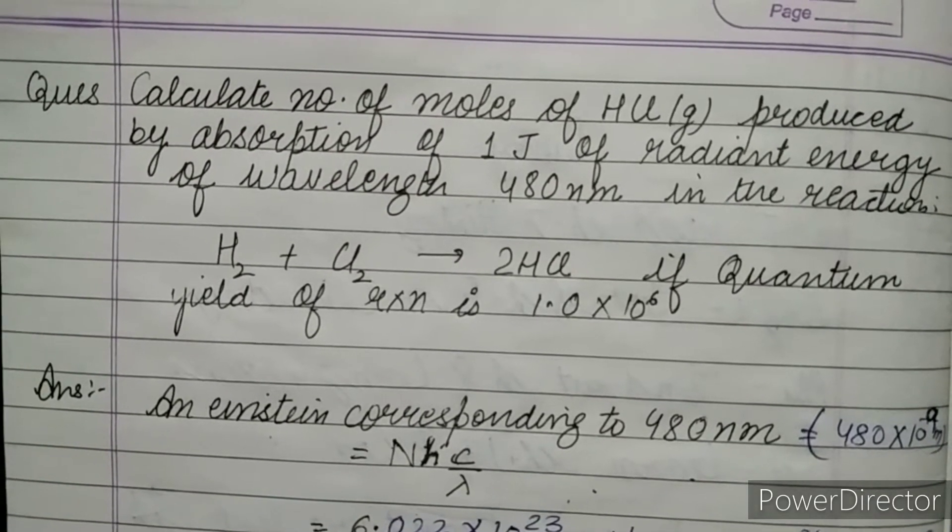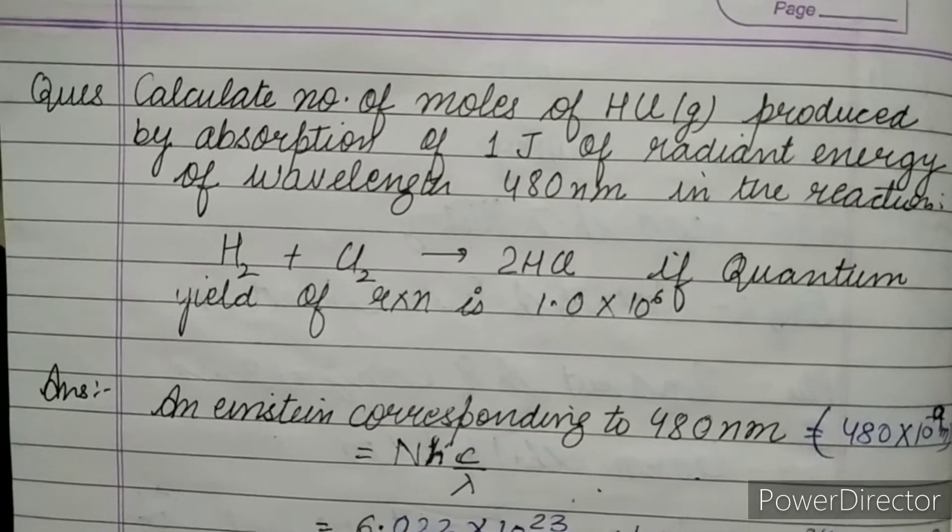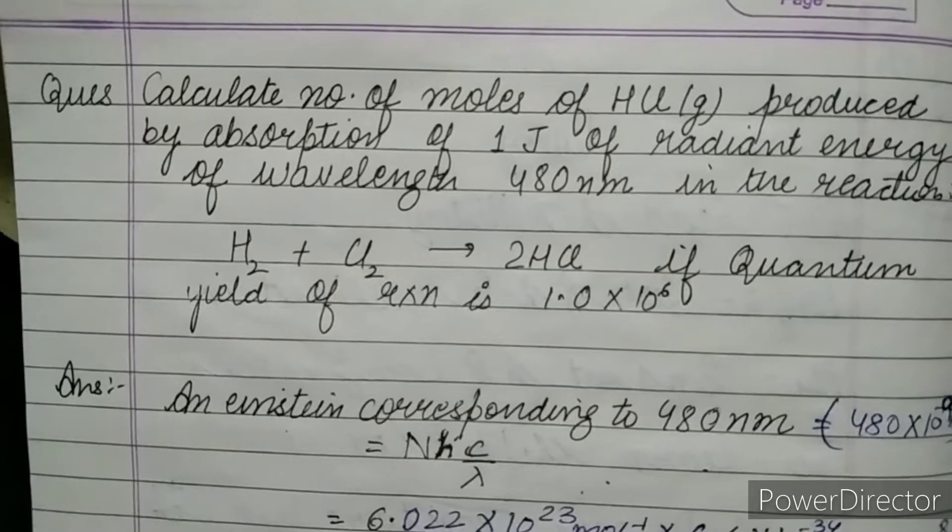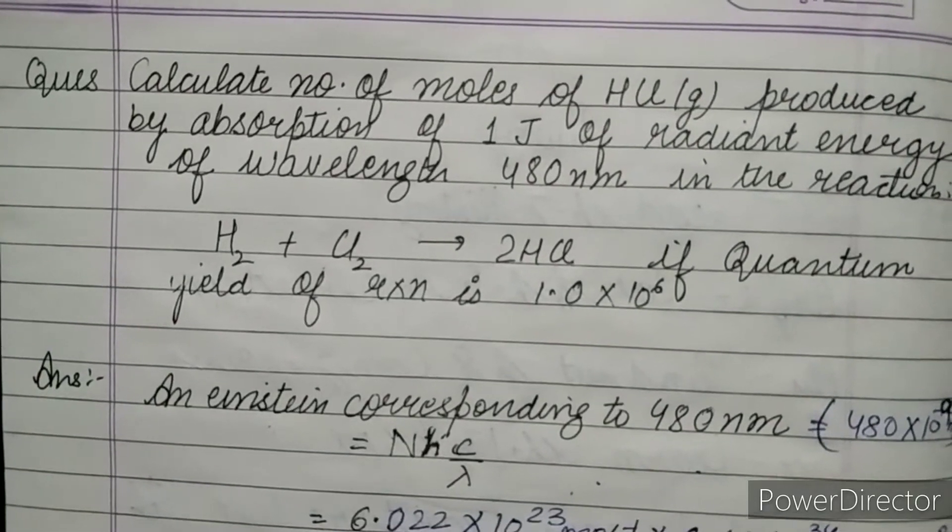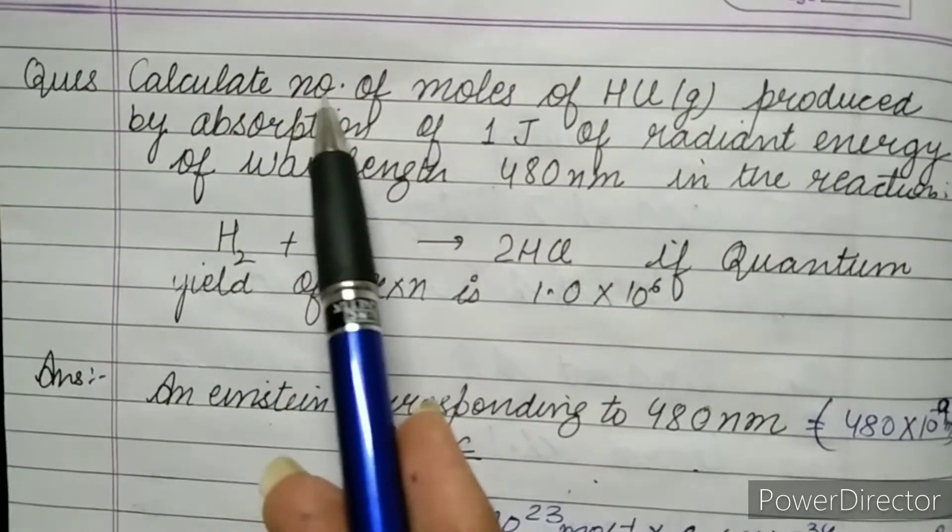Hello guys, welcome back to my channel. I am back with another question from a previous year. This question is from MSc Food semester and the subject is photochemistry. The question asks you to find out the number of moles of HCl produced by the absorption of 1 joule of radiant energy of wavelength 480 nanometer in the reaction.